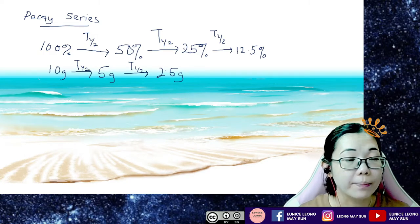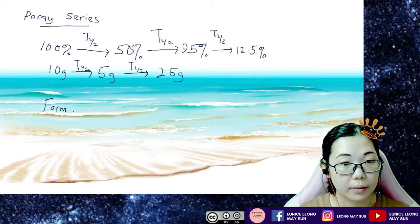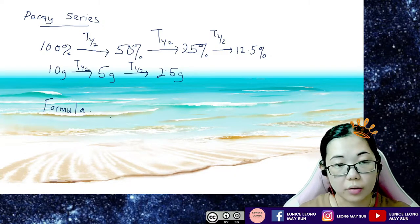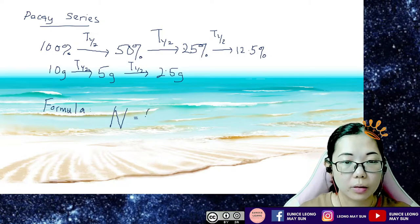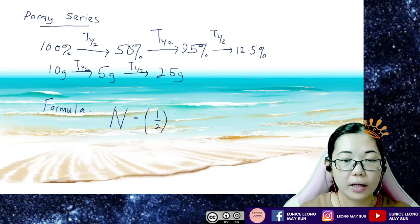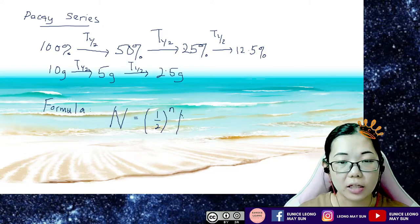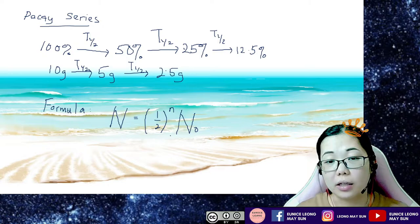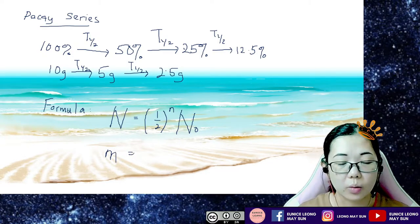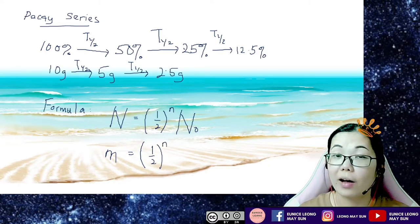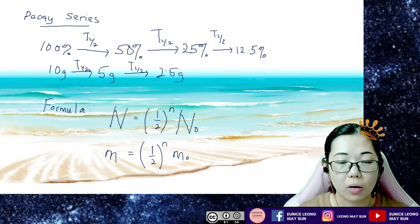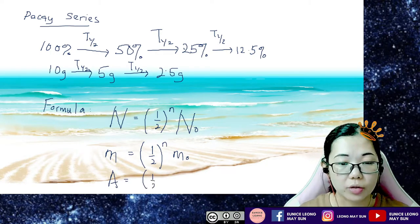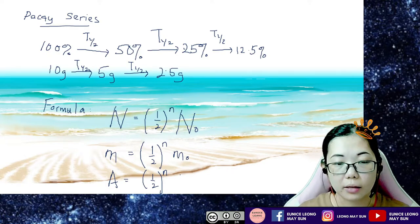The other method is actually using a formula. For the formula, we can use: N equals (1/2)^n times the initial number of radioactive nuclei, where n is the number of half-lives. Or we can change it to mass: M equals (1/2)^n times the initial mass. Or we can use activity (count rate per second): A equals (1/2)^n times the initial activity A₀.